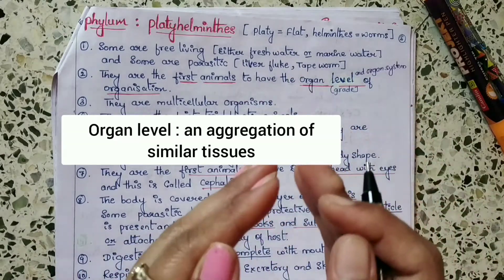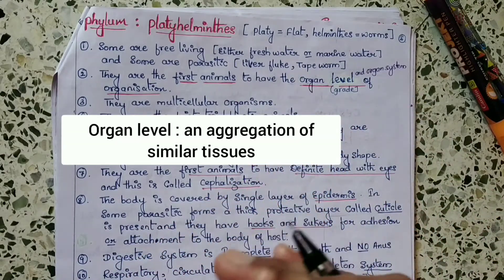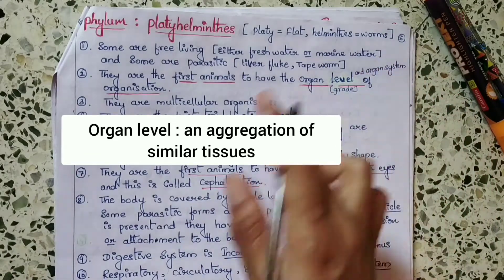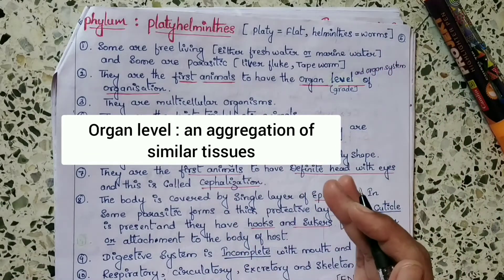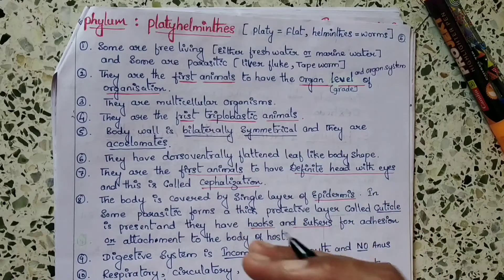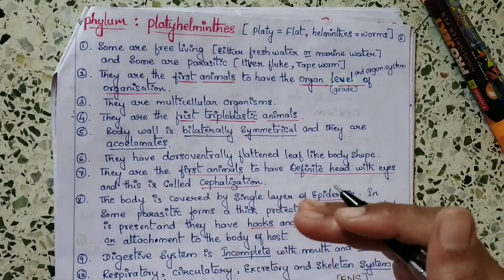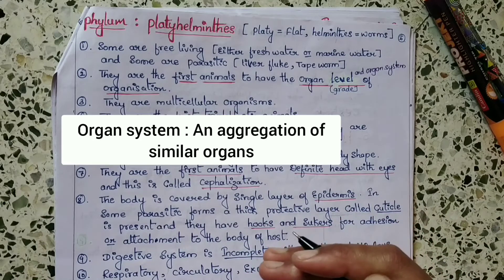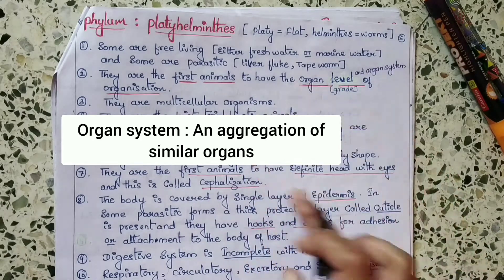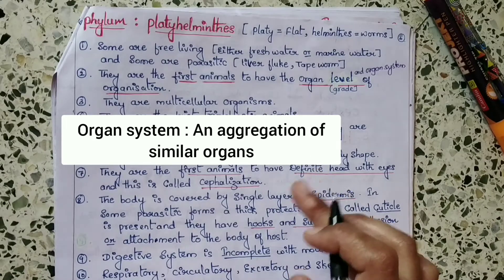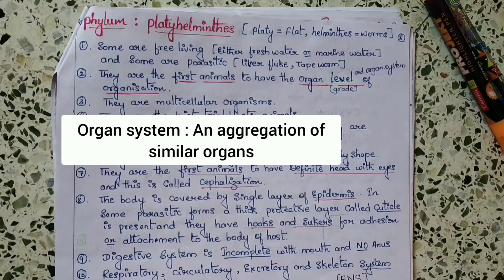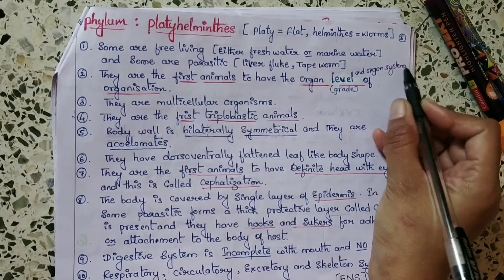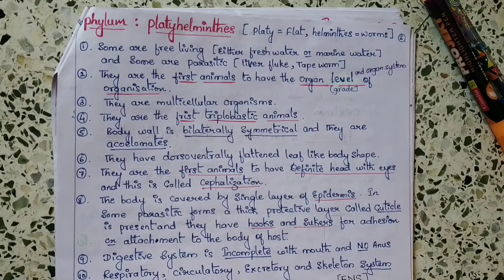Similar tissues are organized into a definite organ to perform a particular function — that is called organ level. And organ system grade of organization means similar organs are organized into a definite organ system to perform a particular function. That is called organ system of organization.